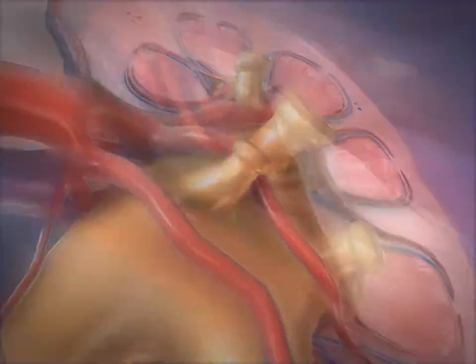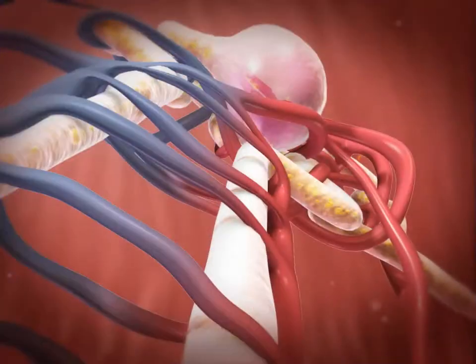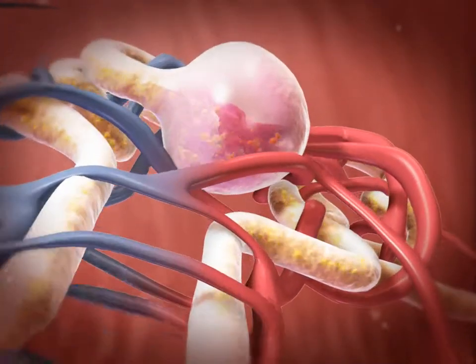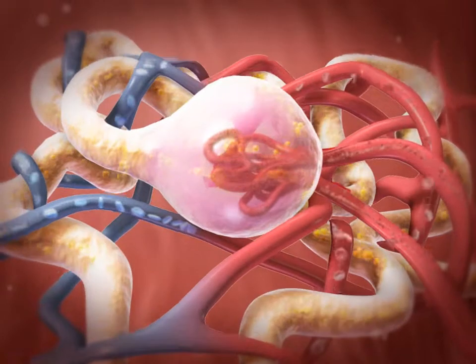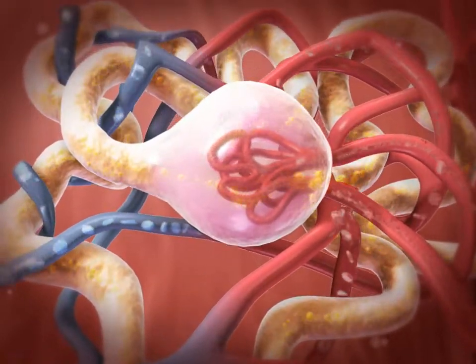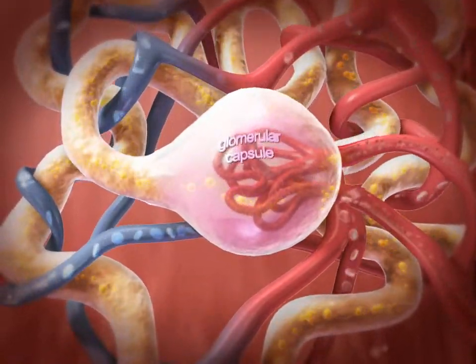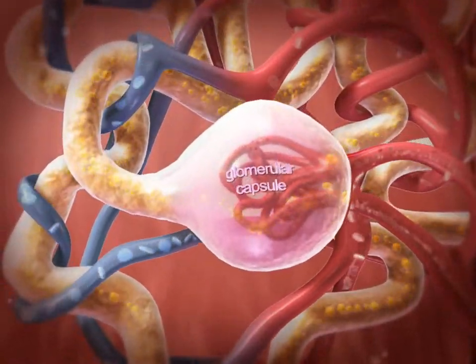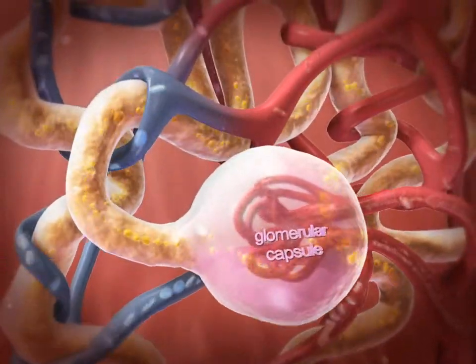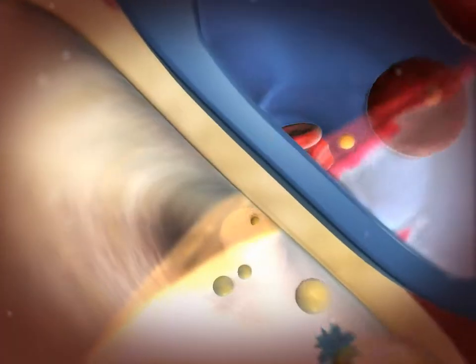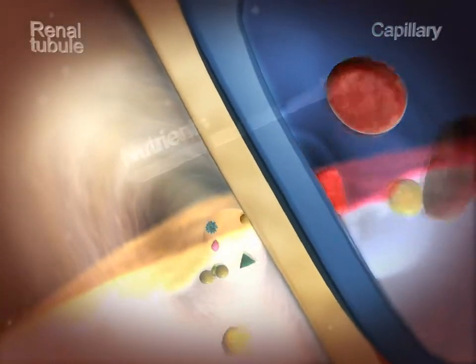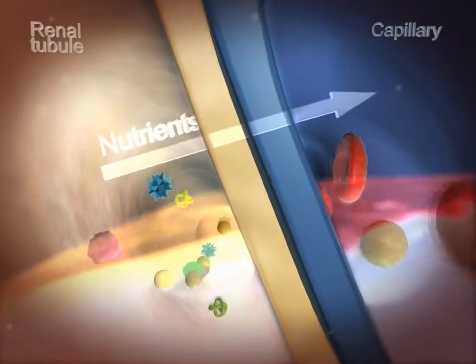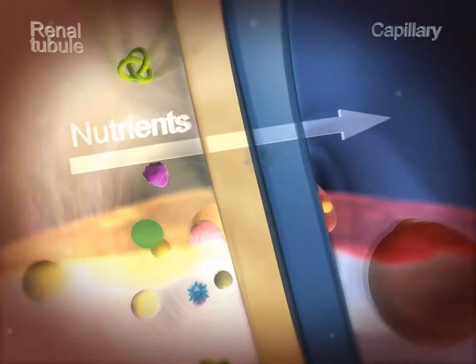Glomerular filtration produces a plasma-like filtrate containing waste, but also water and other substances the body needs. As the filtrate passes out of the glomerular capsule and through the renal tubule, substances like water and essential ions